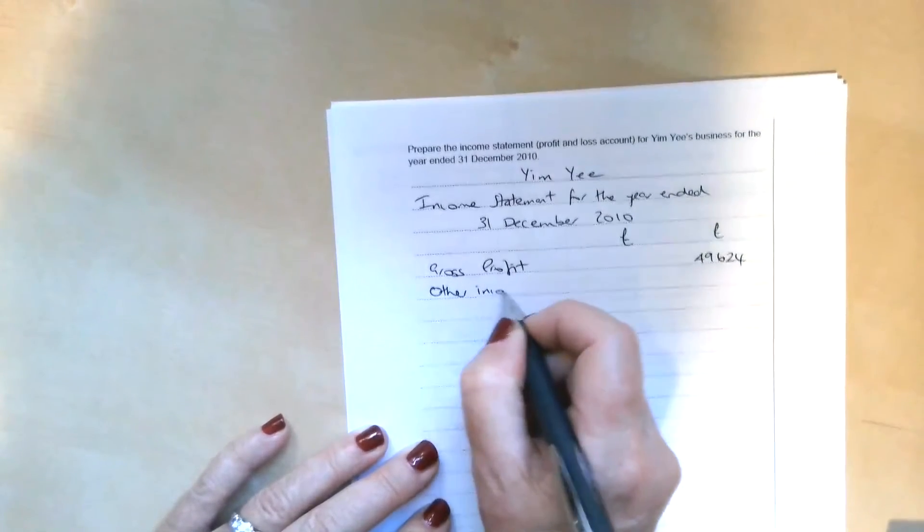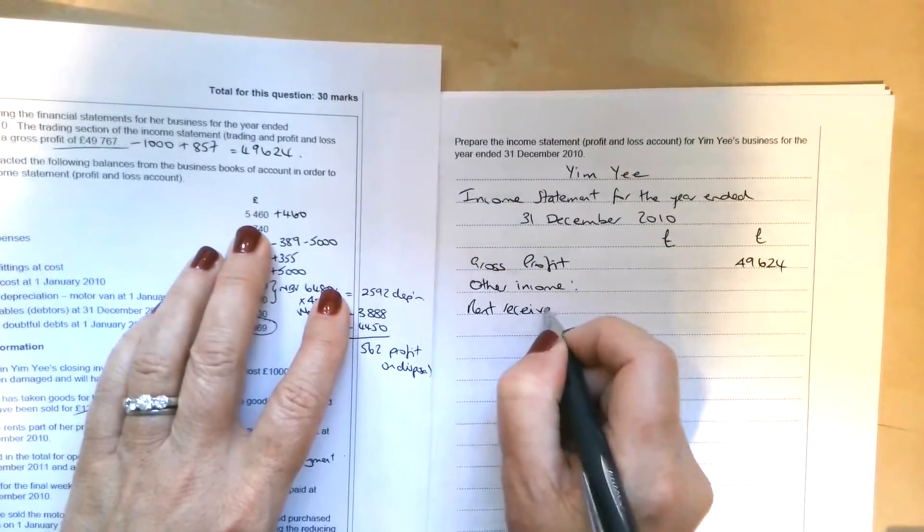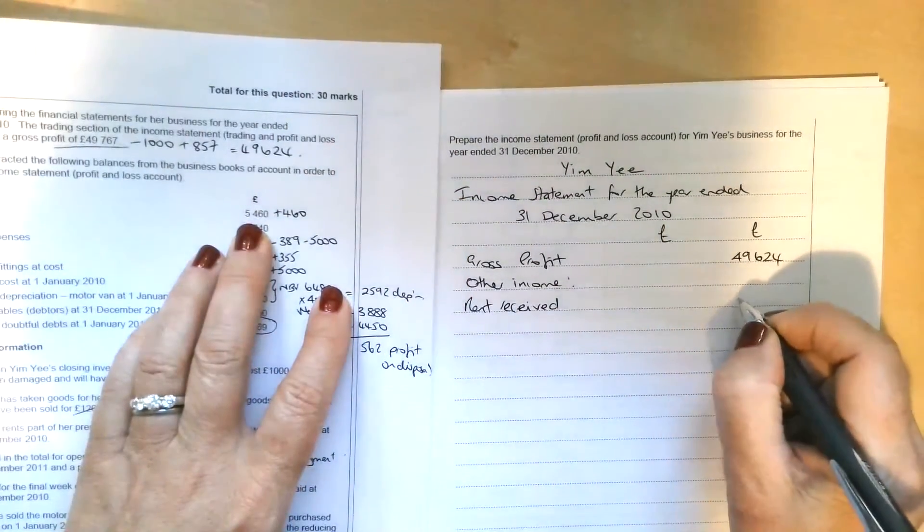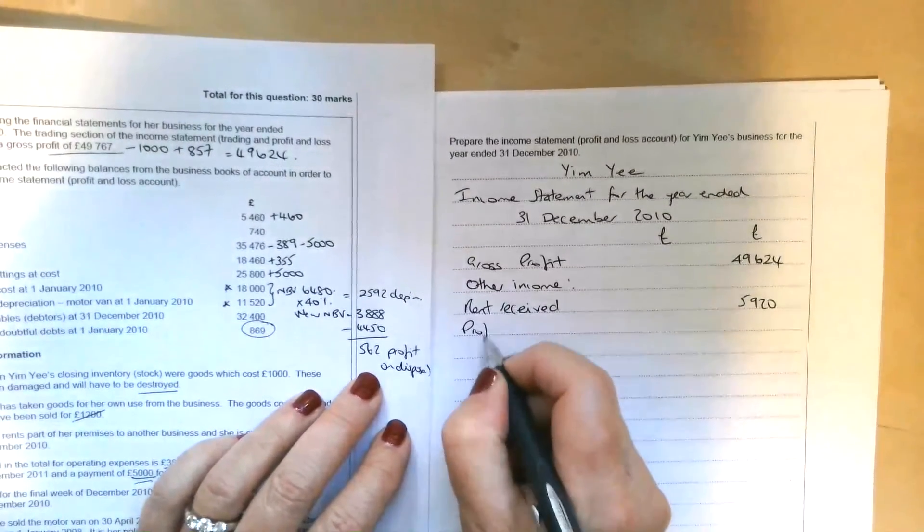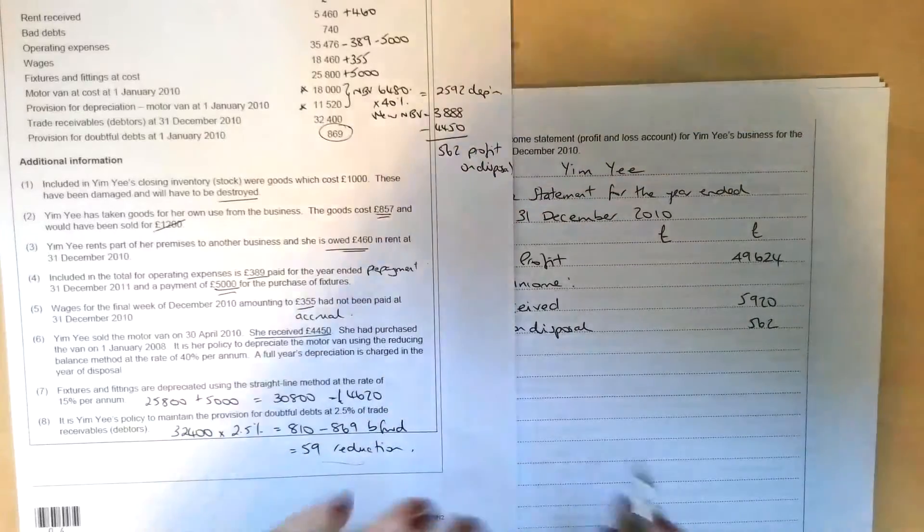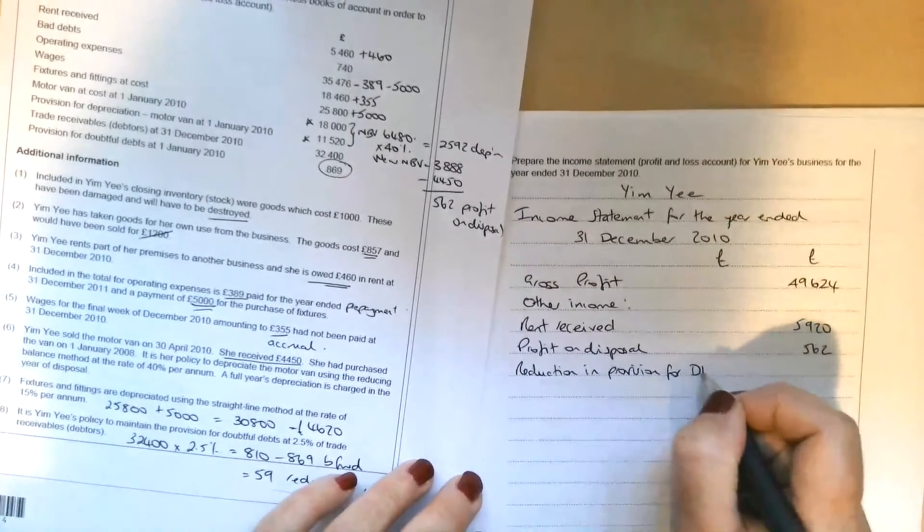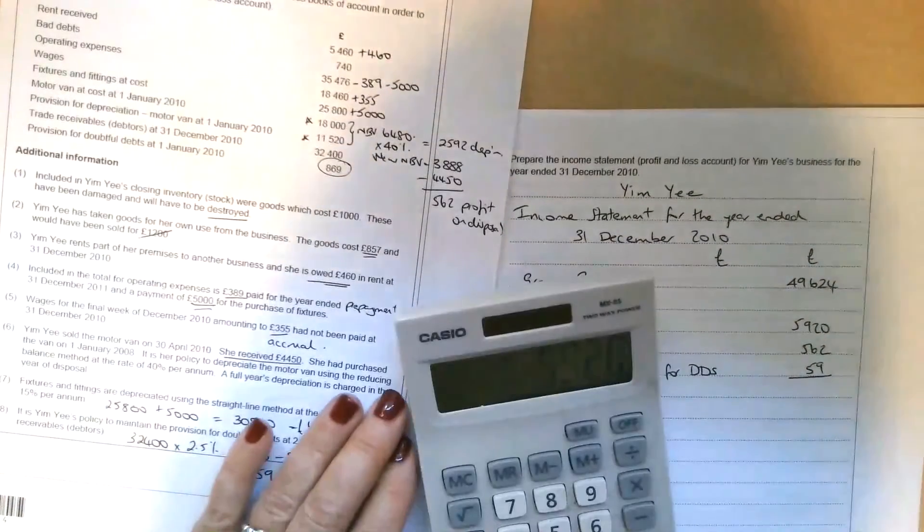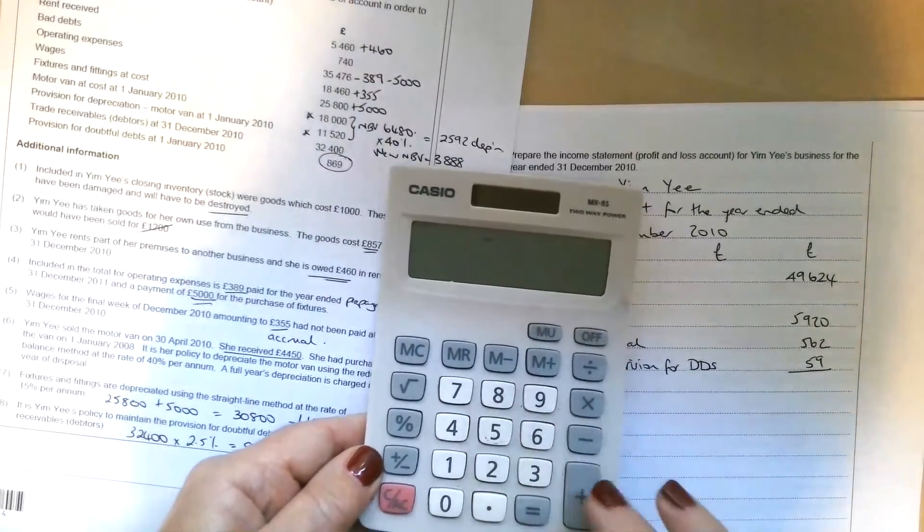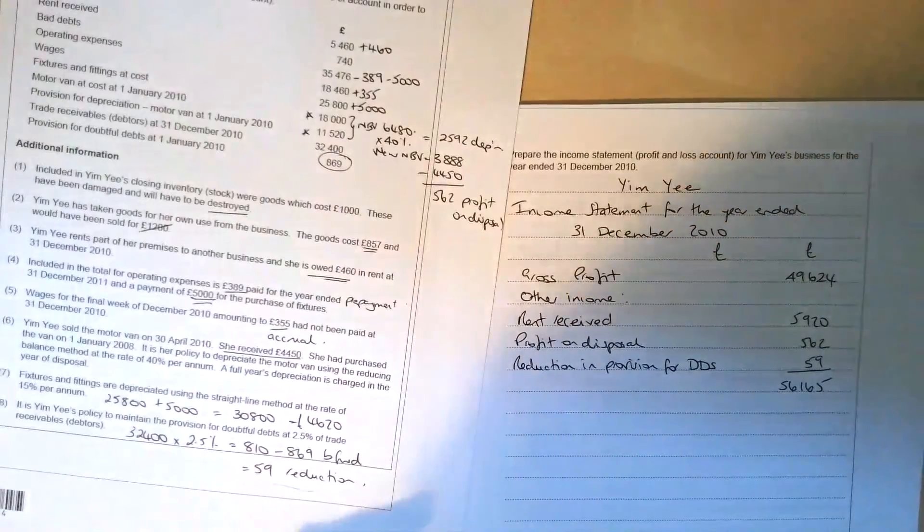Then we're going to add the other income. We've got three sources of other income. We've got the rent received, which is the £5,460 plus the £460 that was owed at the end of the year. So £5,920 for rent received. Then we've got the profit on disposal of the non-current asset. That's £562. And we've also got the reduction in the provision for doubtful debts. So we can put that in there. Reduction in provision for doubtful debts, £59. Don't confuse that with direct debits. Then we can add those figures together. We can add it to the original gross profit. So £49,624 plus the £5,920 plus the £562. So we've now got a figure there of £56,165, from which we can start to deduct our expenses.